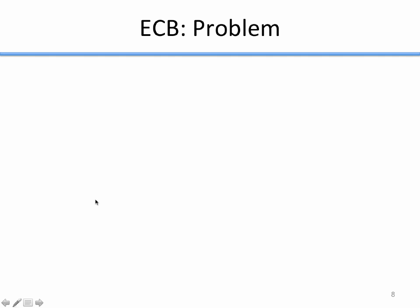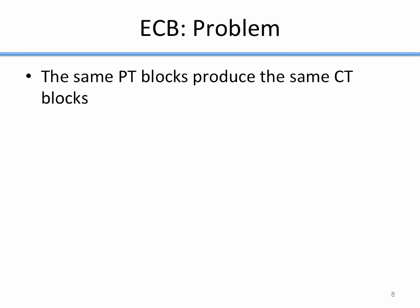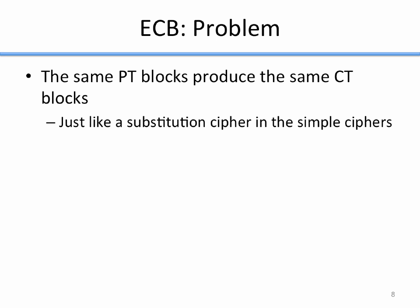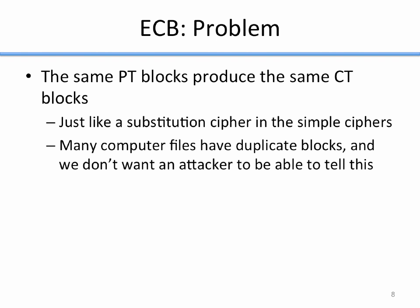It's got a problem. One thing you'll learn about cryptography is the straightforward and easy approach always has a problem. In this case, the same plaintext blocks always produce the same ciphertext blocks — just like a substitution cipher. The same plaintext letter always becomes the same ciphertext letter, allowing an attacker to do frequency analysis. With ECB, that same property holds, so an attacker can perform similar frequency analysis to break it. A lot of computer files have patterns and duplicate blocks, and we don't want an attacker to be able to detect that.